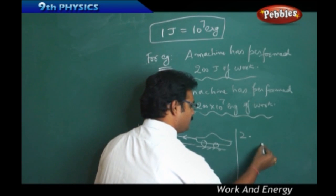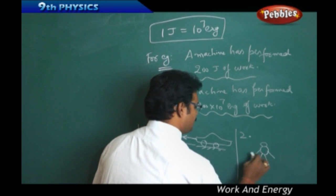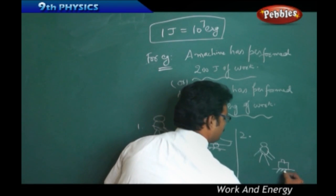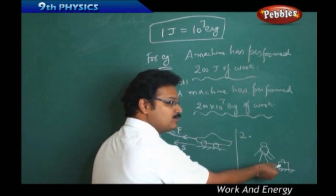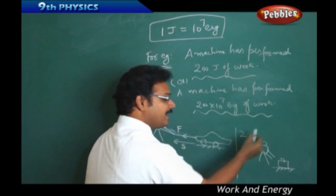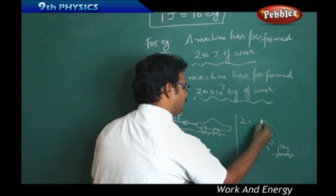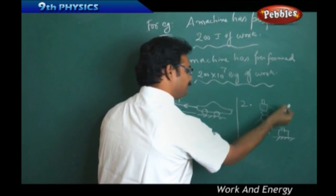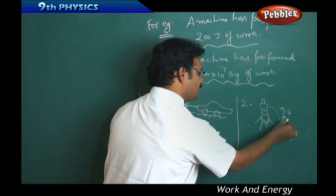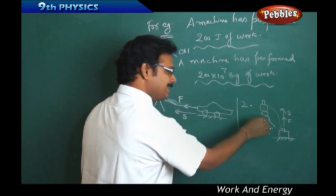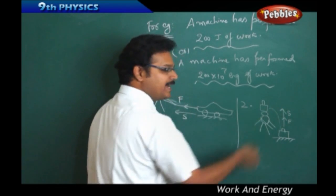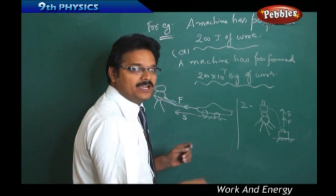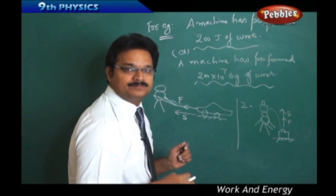Suppose, a person standing on the ground. There is a suitcase on the ground. Then, he lifted the suitcase and put it on the head. Then, the displacement is also in the upward direction. And, he applied the force is also in the upward direction. So, we can say that, as force and displacement are both in the same direction, this person performed work by lifting the suitcase and keeping on his head.